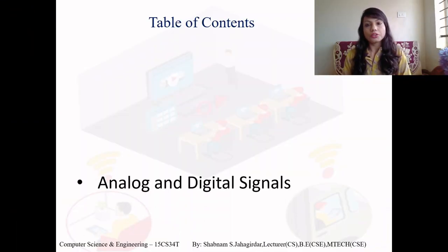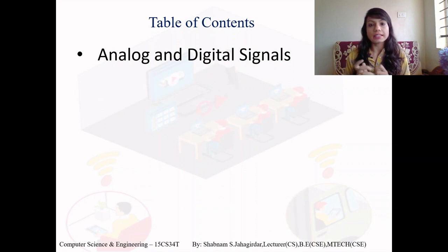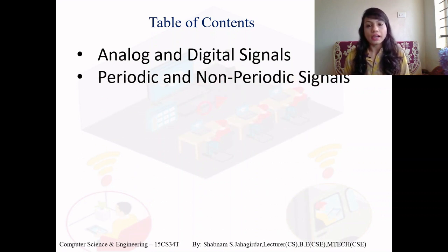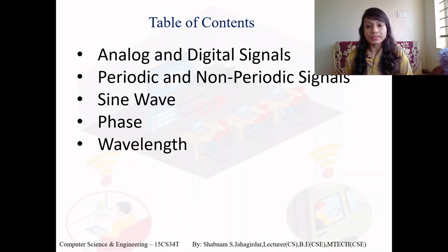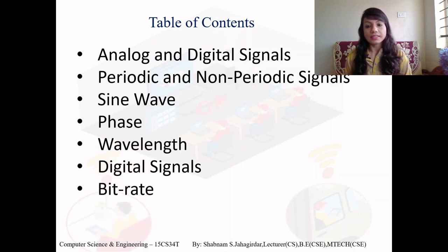A signal can be your analog signal, like a sine wave, or a digital signal, which will have only discrete values. In this video you'll be studying about two types of signals — analog and digital — periodic and non-periodic signals, the sine wave, and different properties like phase, wavelength, bit rate, and bit length.